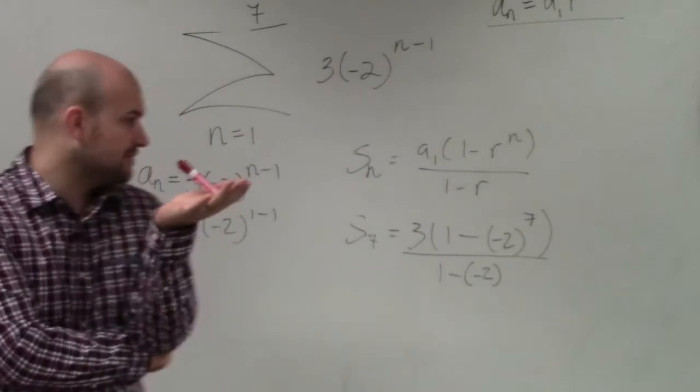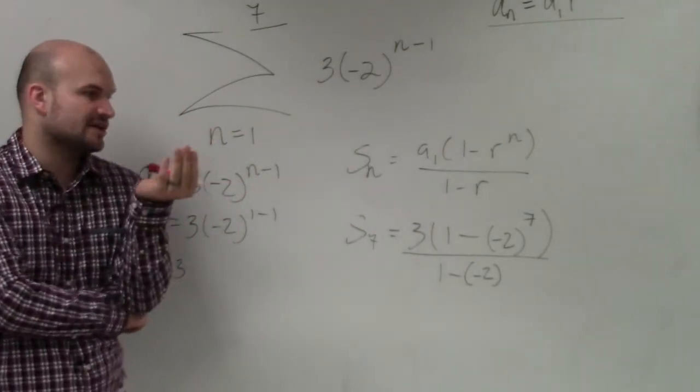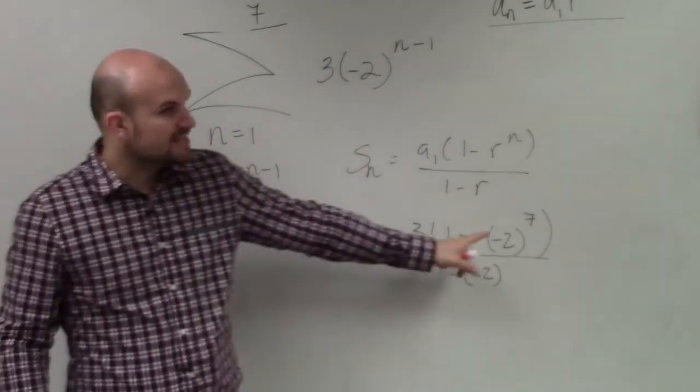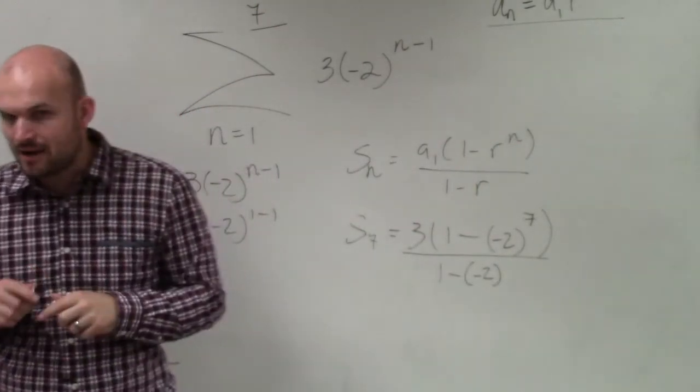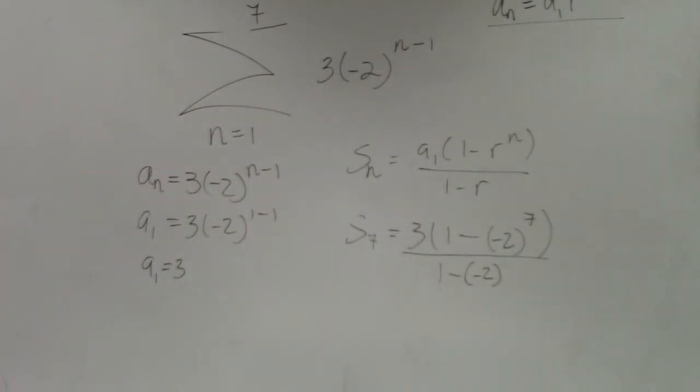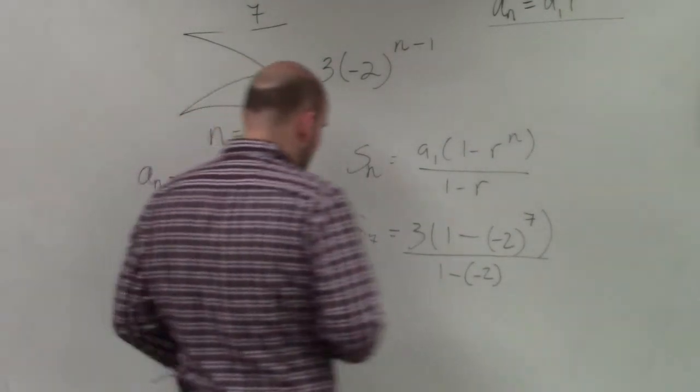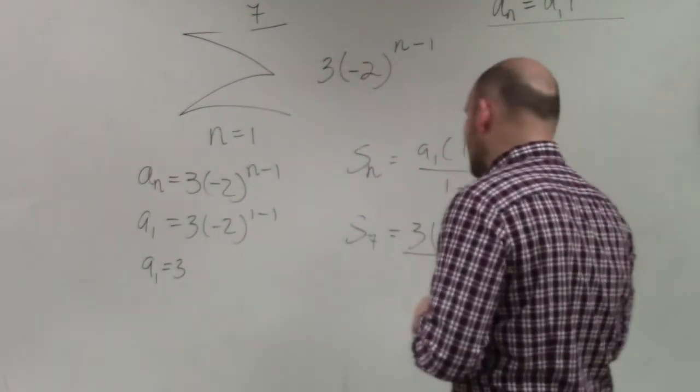So the main important thing, guys, is when you're doing this, you've got to make sure you're very, very careful with your order of operations. This is negative 2 raised to the seventh power. So basically that's negative 2 times negative 2 times negative 2 times negative 2, and so on.